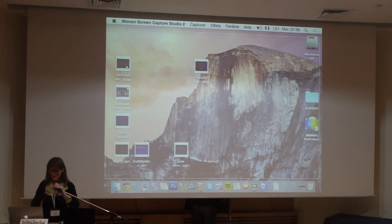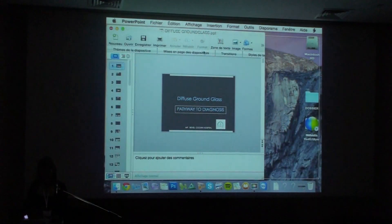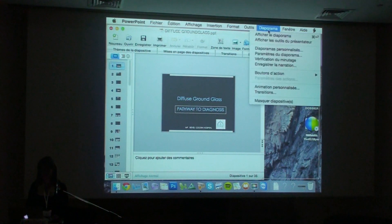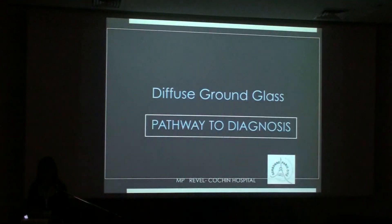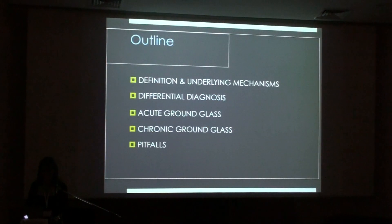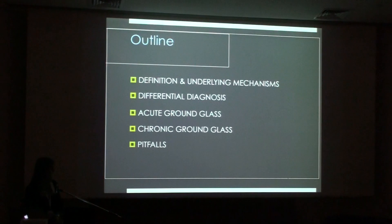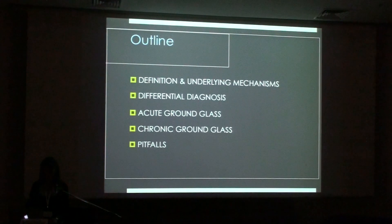Thank you for the nice introduction, Florence. It's really a pleasure to be here again. My first lecture is about diffuse ground glass — how to find a way to go to diagnosis. This is the outline of our talk: we will see some definitions, differential diagnosis, and then I will talk about acute and then chronic ground glass, and we'll talk briefly about the main details.